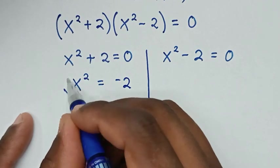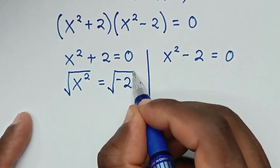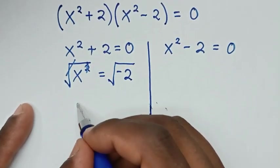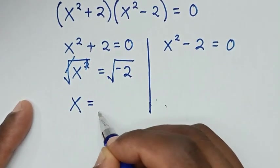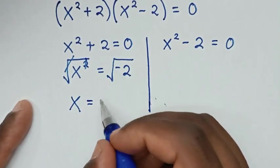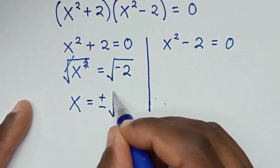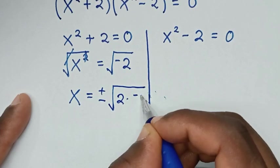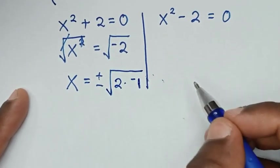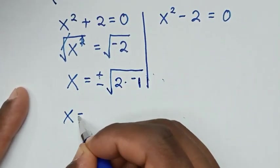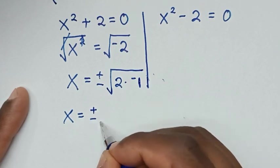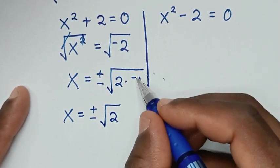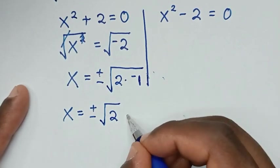Then we apply square root to both sides. The square root cancels with the square, so x is equal to plus or minus the square root of negative 2. Since negative 2 is 2 times negative 1, it becomes x equals plus or minus square root of 2 times square root of negative 1, which is i.